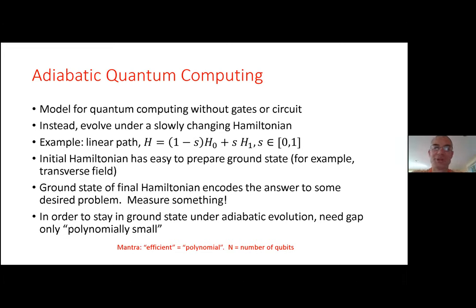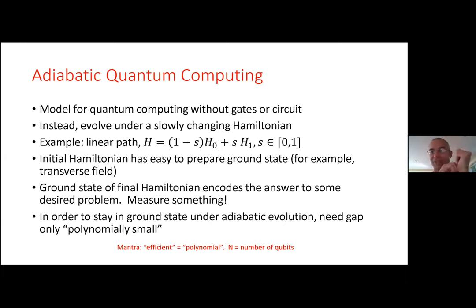What is adiabatic quantum computing? The normal model people think about for a quantum computer involves gates and a circuit: you have qubits, which are like spin-half particles, and a bunch of gates — just like classical computing involves bits that are zero and one and logic gates like AND gates and NOT gates. Quantum gates are unitaries acting on a few qubits. You prepare qubits in some state, act on them with gates, and then measure something.